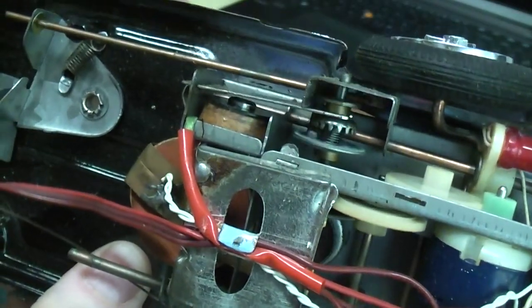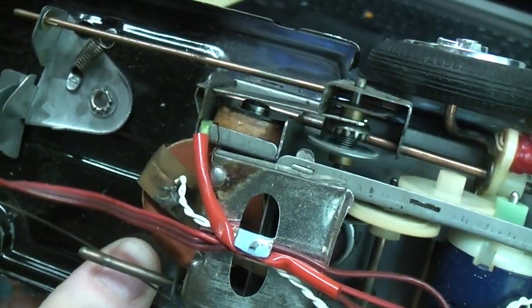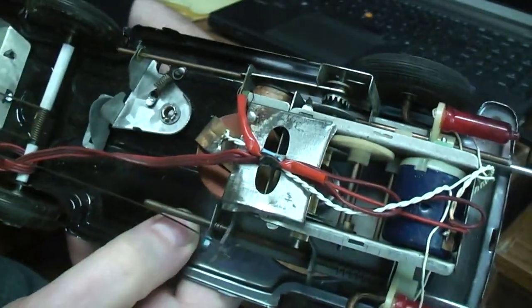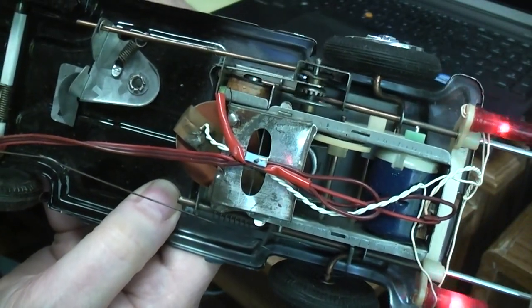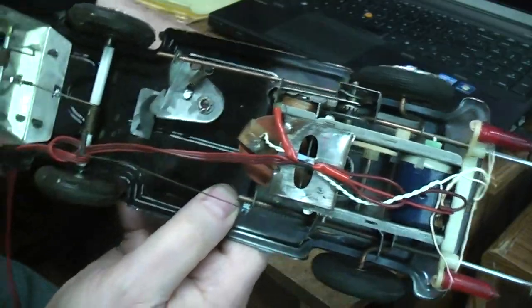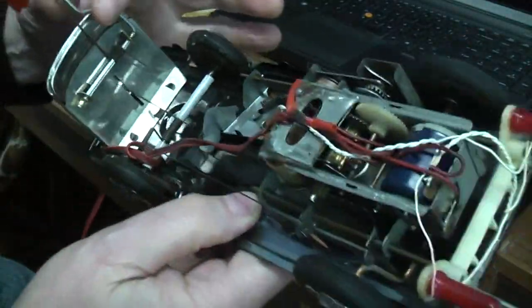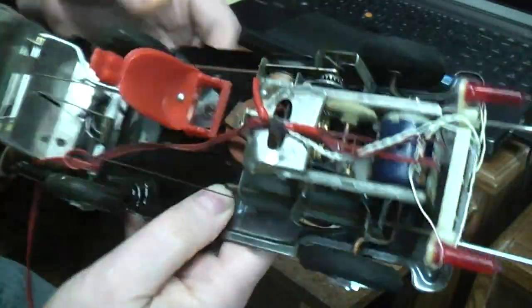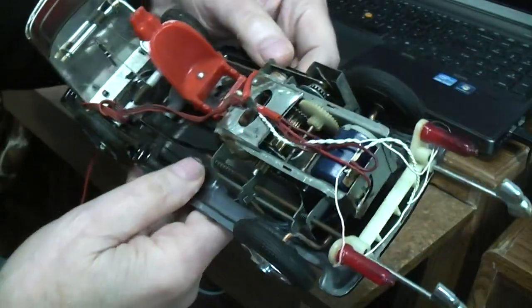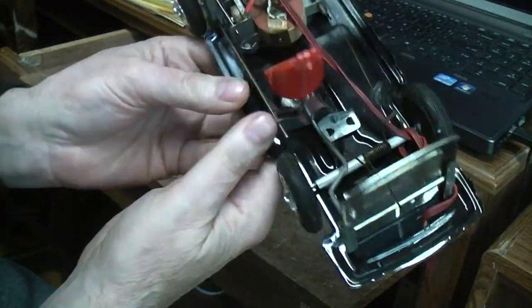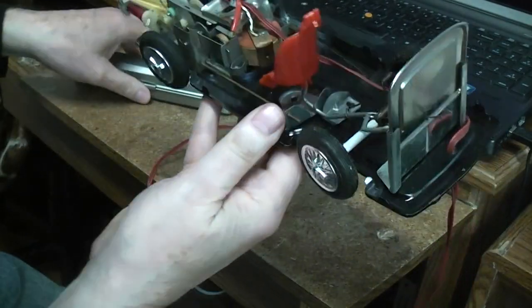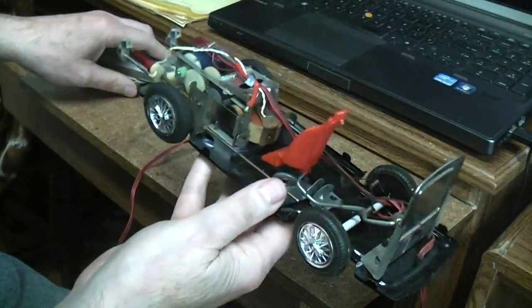See how that moves in there? So it's kind of ingenious how they were able to do all that with a single motor and one electromagnet, clicker, and just reversing it and operate the whole thing off all those D-cells.